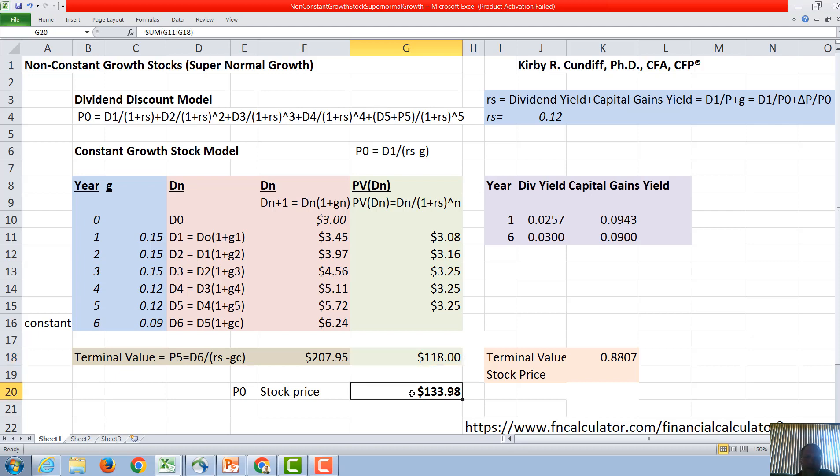Now to get the stock price we sum all of these present values, and you can see that's going to be the sum of G11 to G18 or $133.98. Of the stock price most of it is in fact the terminal value. So if we look at the terminal value as a percentage of the stock price, $118 divided by $133.98, we get around 88 percent.